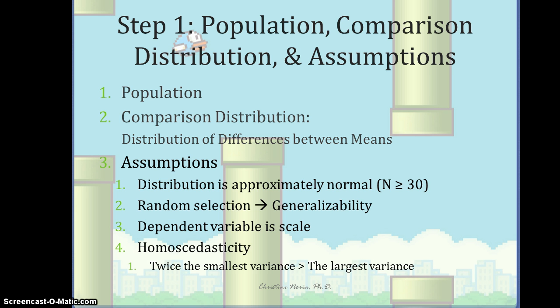And lastly, we have a new assumption. The first three are ones that you've seen before, but this last one is called homoscedasticity. Another way that we can say that is homogeneity of variance. With homoscedasticity, what we're looking for to see whether or not this assumption is met is we calculate the variance for each of our different groups. That means we'll have a variance for the no shots of espresso, the one shot, the two shot, and the three shots of espresso groups. Then we take the smallest variance, and we multiply it by two. And that value, the two times the smallest variance, should be greater than the largest variance from all of the groups. If that is the case, then we can assume that we've met the assumption of homoscedasticity or homogeneity of variance.